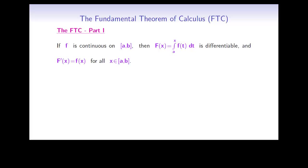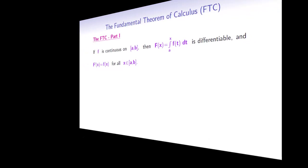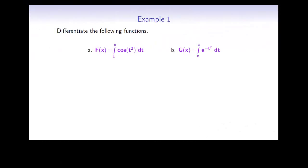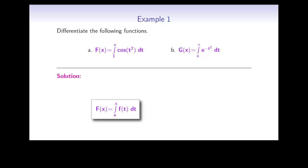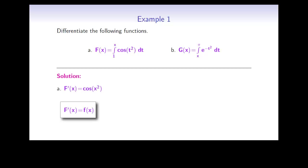Now let's have a look at a few examples. Differentiate the following two functions. In part a, the function F is defined as the integral from 1 to x of cos(t²) dt. We can apply the first part of the fundamental theorem right away, as the lower bound is a constant, 1, and the upper bound is the variable x. So by the first part of the theorem, F prime of x is equal to cos(x²).